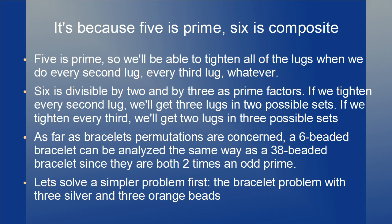Since 5 is prime, we'll be able to tighten all of the lugs whether we do every second lug, every third lug, or whatever. Since 6 is divisible by 2 and 3 (a prime factor), if we tighten every second lug we'll get 2 sets of 3 lugs, and if we tighten every third lug we'll get 3 sets of 2 lugs. As far as bracelet permutations are concerned, a 6-beaded bracelet can be analyzed the same way as a 38-beaded bracelet, since they are both 2 times an odd prime. So let's solve a simpler problem first — the bracelet problem with 3 silver and 3 orange beads.